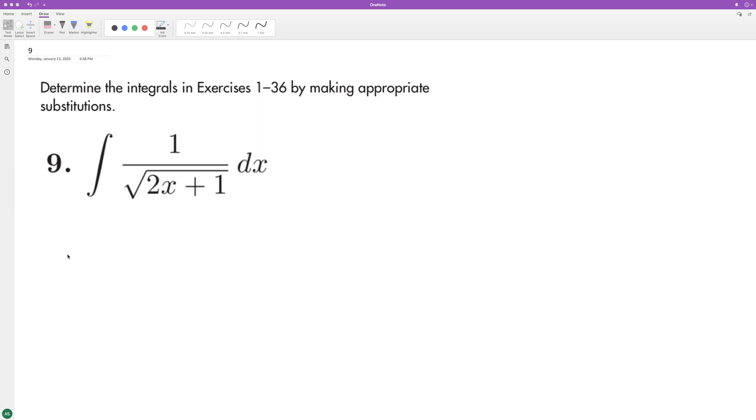To integrate the following problem, we'll use u-substitution. We'll set u equal to 2x plus 1, and du is going to be equal to 2. That's not what we have, so to get du equal to dx, we need to multiply du by one half.